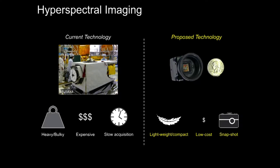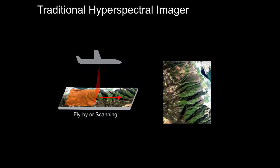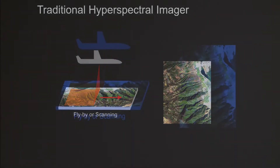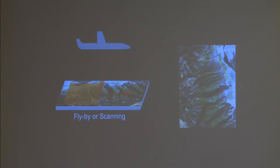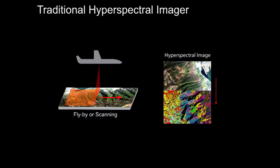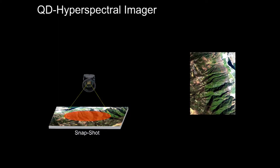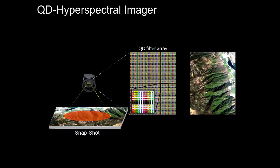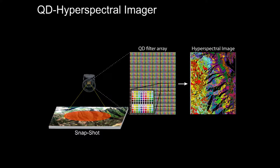Your traditional hyperspectral imager — say you're in the agricultural business, looking at forests — uses a plane, drone, or something that flies around and takes an image of the scene line by line: it takes a one-line image, creates a spectrum for each point of that line, and stitches the total image together. That takes time. We'd like to do this in one go — take a snapshot with our quantum dot hyperspectral imager. It's a whole bunch of quantum dots spread in superpixels, each superpixel being the spectrometer, and then recreate the hyperspectral image.